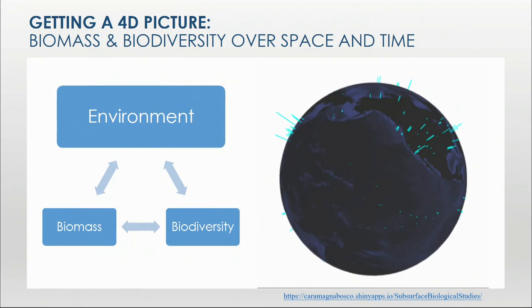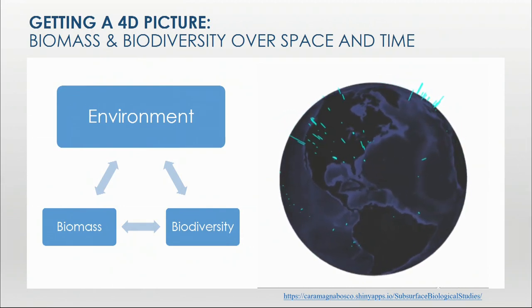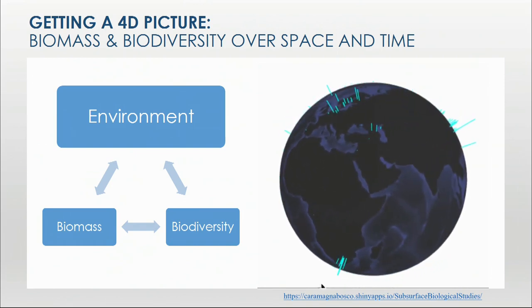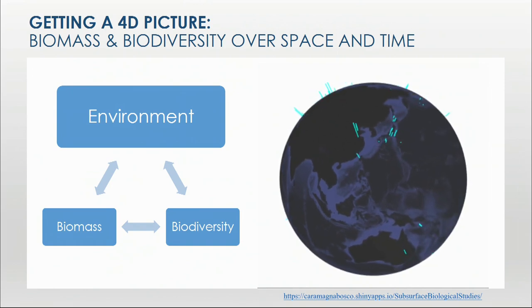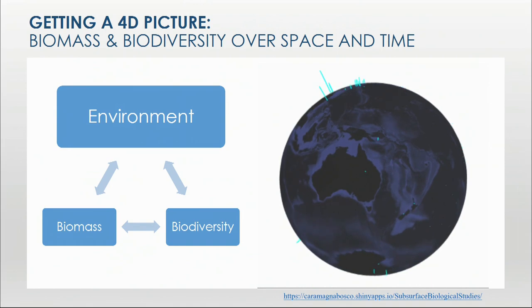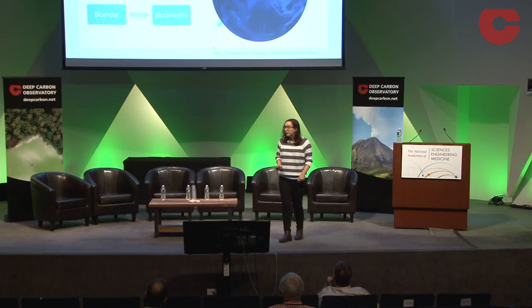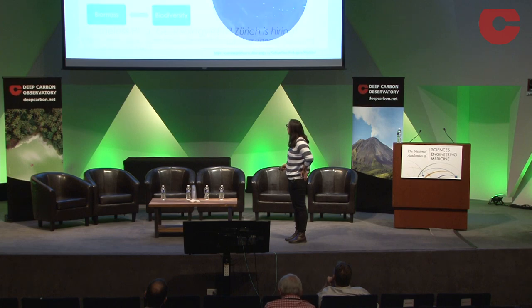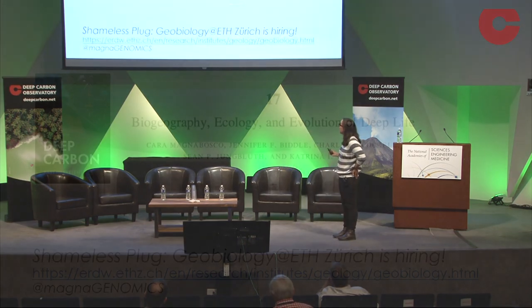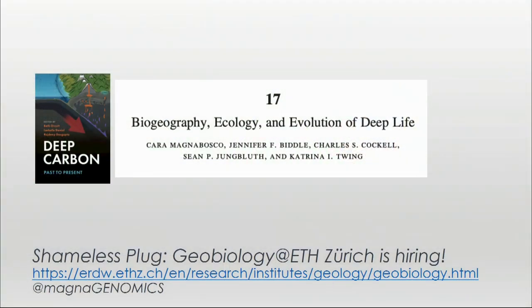To conclude: we have a really intricate tie between the constraints the environment places on biomass and biodiversity. The big question is whether we can project this into more global models — not just of the current environment, but thinking about this throughout time. We're very much looking forward to working on that. Thanks additionally to the authors of the paper and this group of wonderful collaborators who inspired many of the ideas about the controls and limits of deep life — and a shameless plug that the new group is hiring, so check for job call announcements.